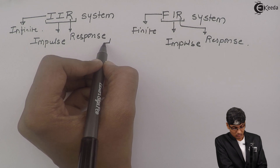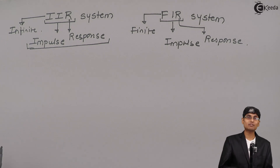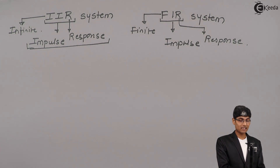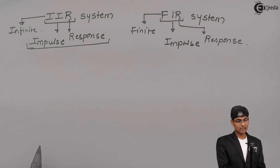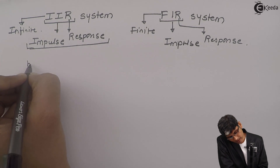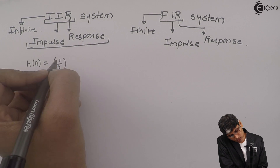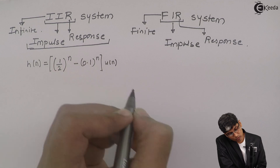Previously we were having a knowledge of impulse response. An impulse response of a system is the output of a system when the input is an impulse. Now, the impulse response could be finite in value — then it becomes an FIR — or it could be infinite in number, making it an infinite impulse response. An example of an infinite impulse response is H(n) = (1/2)^n minus (0.1)^n, the whole multiplied by U(n).